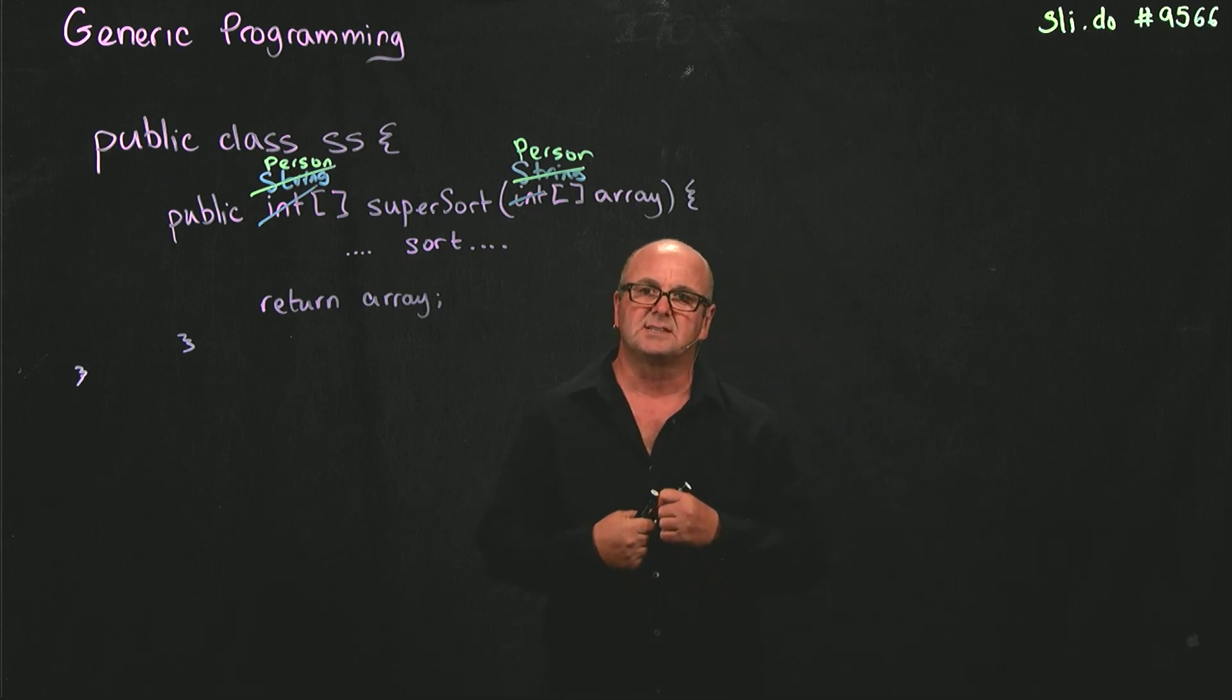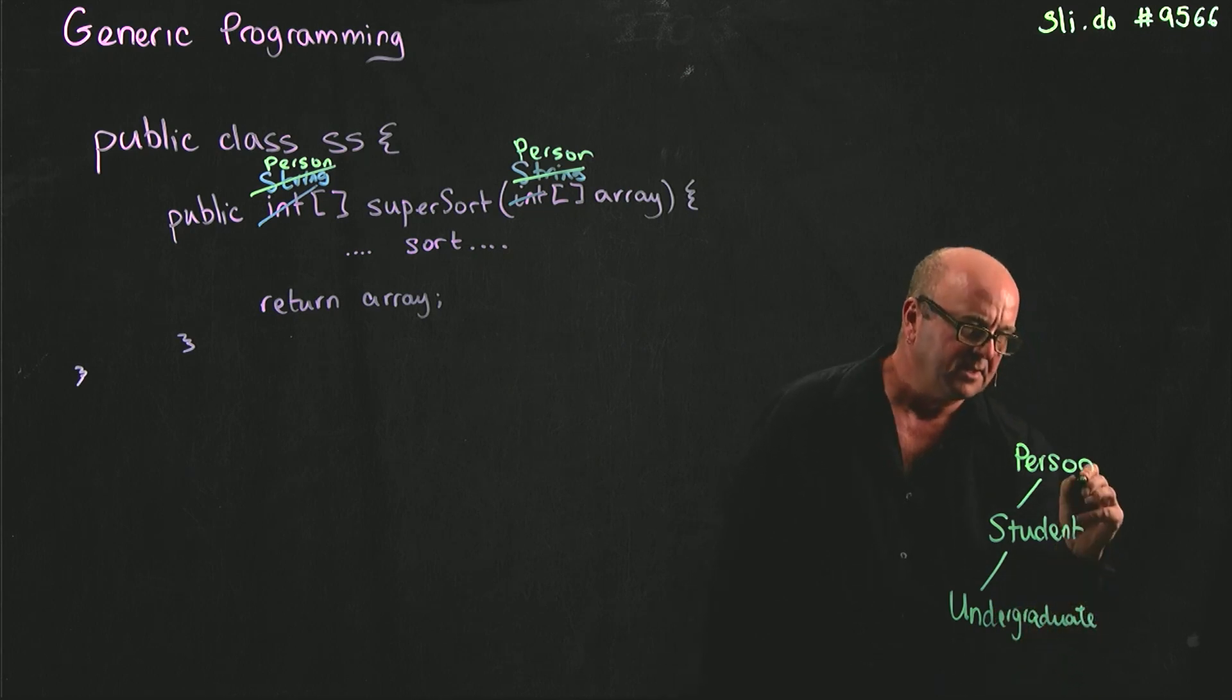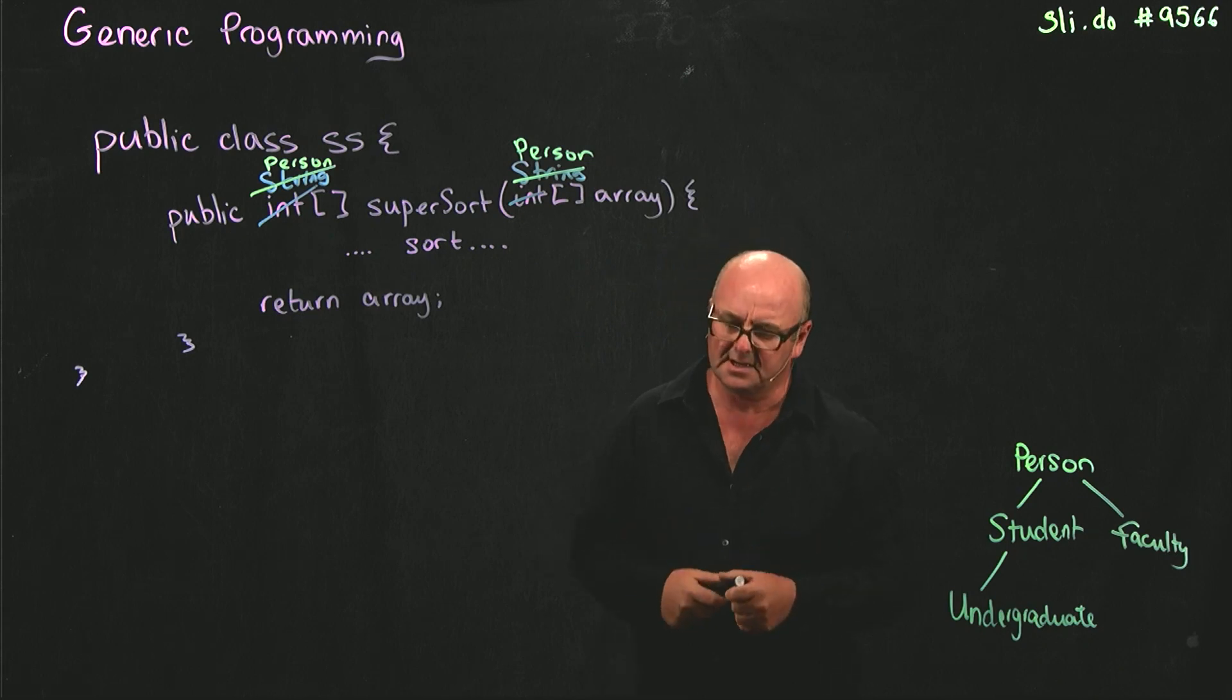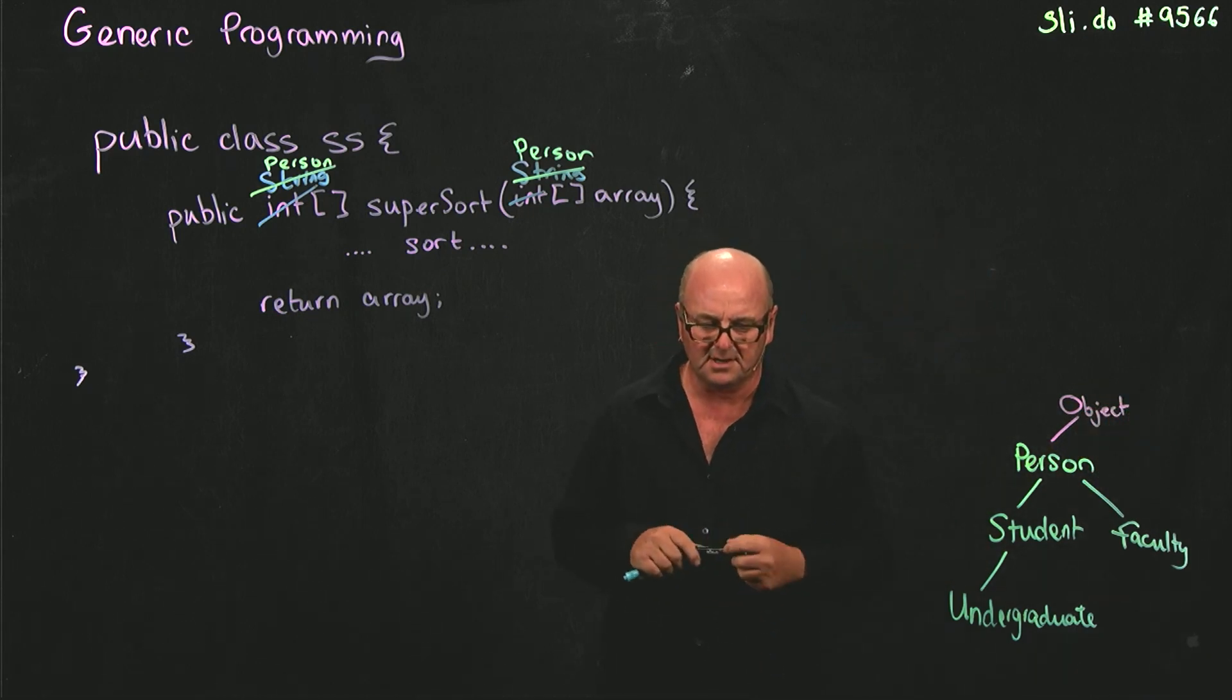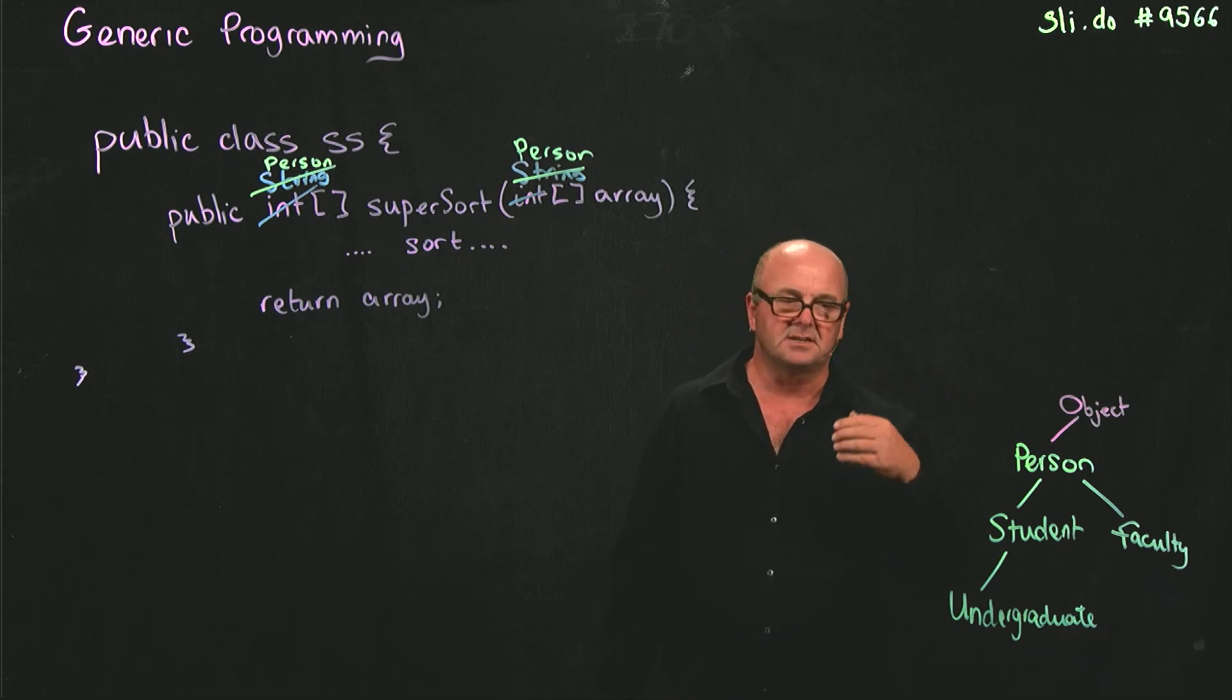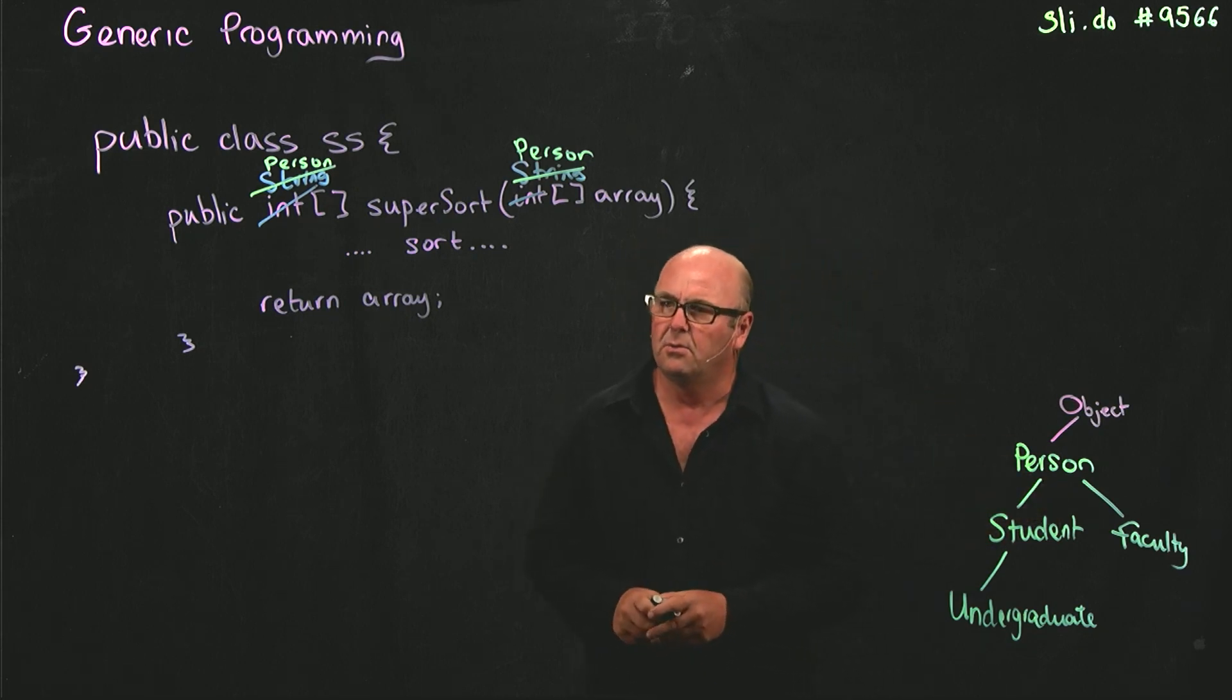So when we talked about objects the other day, we talked about a person object, and we had students, and we had undergraduate. We also had faculty. And the other thing that I mentioned is that every object is an object. So above our person, there's an object class. Every object is an object. So person is an object, student is an object, undergraduate is an object, faculty is an object. So if I wanted to make a data structure, let's say I wanted to make an array that could hold person, student, undergraduate, or faculty, what kind of array could I make?